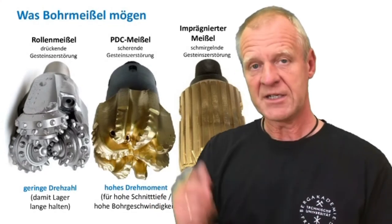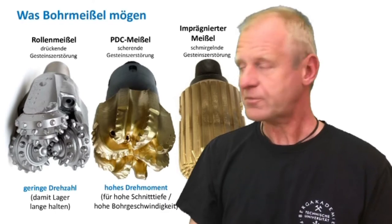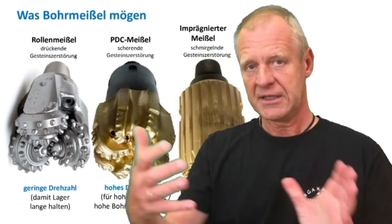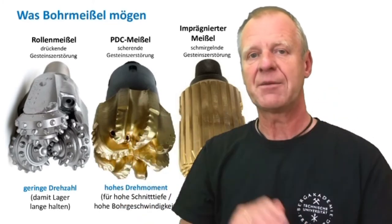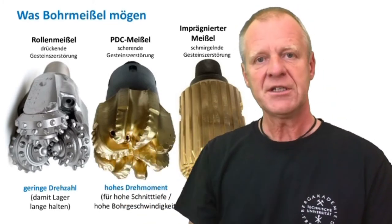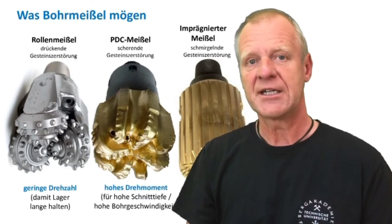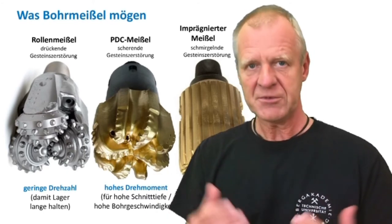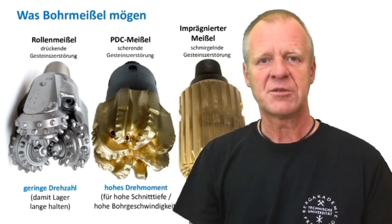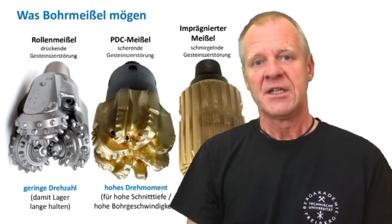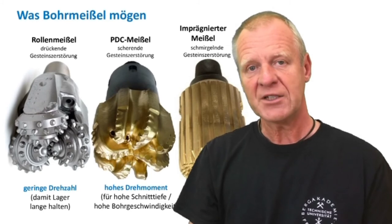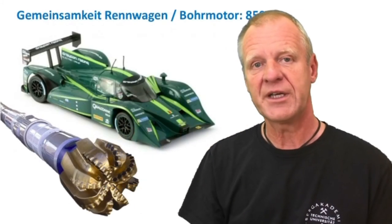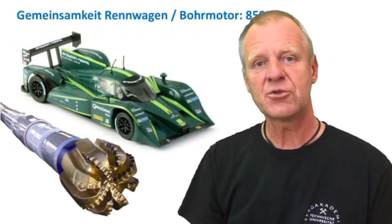For example, roller cone bits prefer slower rotational speeds, while PDC bits require higher torque because they shear away the rock, while impregnated bits, which sand the rock away, require much higher speeds to make hole. So there is an optimum downhole motor for each drill bit. These motors are surprisingly very strong and can reach many hundreds of horsepower — in some cases 850 horsepower.